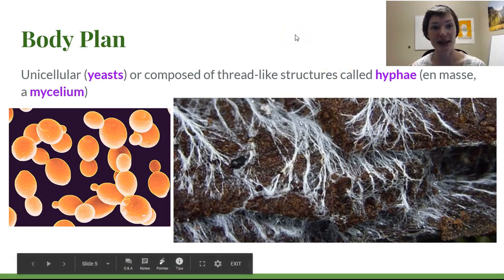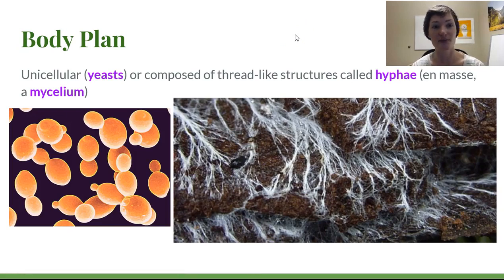Let's look at the body plan. We have two major options here. We have a unicellular form, which has evolved multiple times in different groups of fungi. It isn't some ancestral condition, it's something that's derived. So something that has evolved independently within this group multiple times. This ability to be unicellular. So unicellular fungi are called yeasts. They tend to reproduce by just blobbing off a new little yeast. It's called budding.